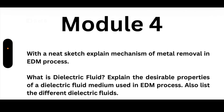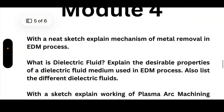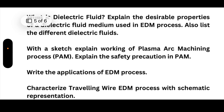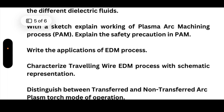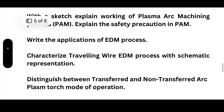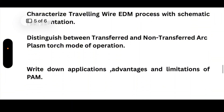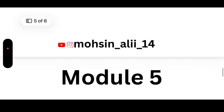From Module 4: with a neat sketch, expand the mechanism of metal removal in the EDM process; explain what dielectric fluid is and expand the desirable properties of a dielectric fluid medium used in EDM, and list different dielectric fluids. With a sketch, expand the working of Plasma Arc Machining (PAM) — this is a most important one; explain the safety precautions in PAM; write the applications of EDM; characterize traveling wire EDM with systematic representation; distinguish between transferred and non-transferred arc plasma torch modes of operation; and write applications, advantages, and limitations of PAM.